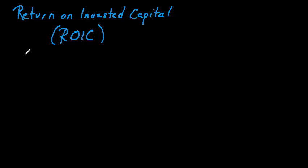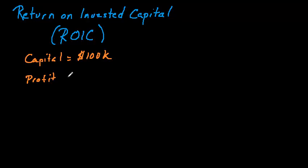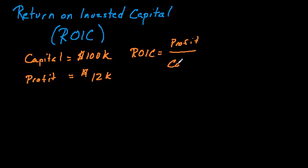Let's suppose that we have some capital to invest in a small business — one hundred thousand dollars of capital. That's our invested capital. After one year, we generate a twelve thousand dollar profit from that capital. The return on that capital is simply the profit divided by the capital invested: twelve thousand dollars divided by one hundred thousand dollars, giving us a return of twelve percent.